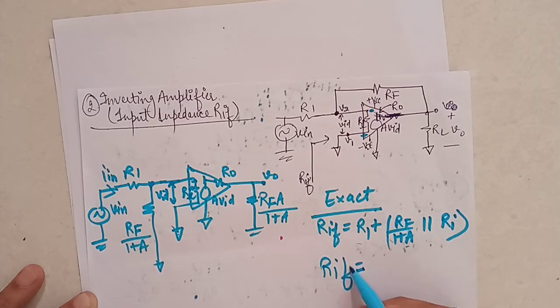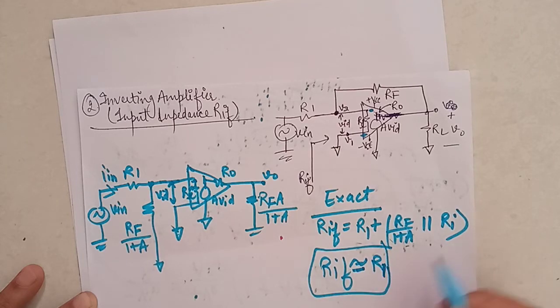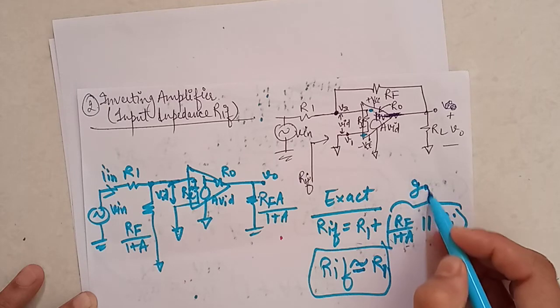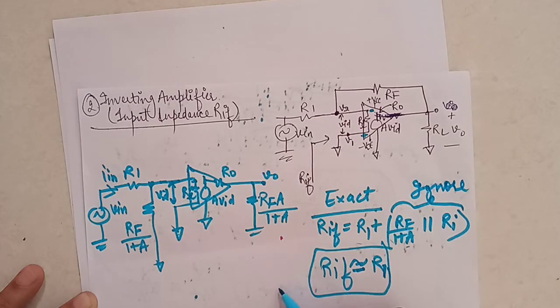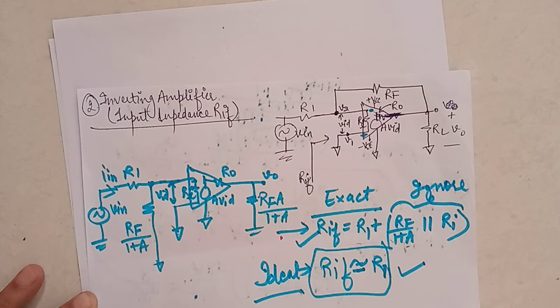So I can write RIF as nearly equal to R1 by ignoring the value of this term. So if you ignore this term, you will get the value which is ideal value of RIF. So this is ideal value and this whole value given here is exact value of RIF.